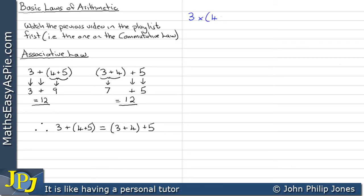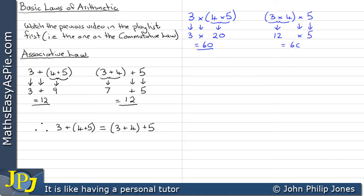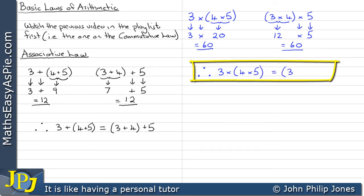I'm going to do another example. I'm going to have 3 times the multiplication of 4 times 5. The 3 comes down and 4 times 5 is 20, and 3 times 20 is 60. Here I'm going to multiply the 3 and the 4, which is 12, and then times that by the 5, which still gives me 60. So we can see we get the same results: 3 multiplied by (4 times 5) equals (3 times 4) multiplied by 5.